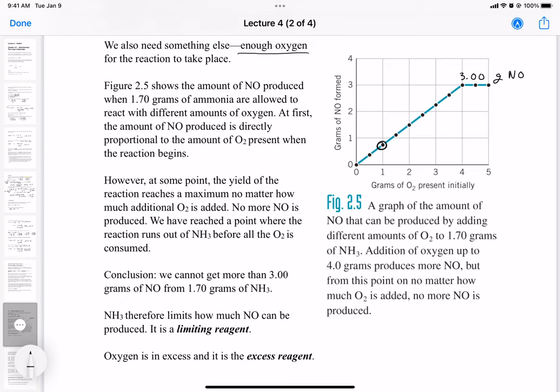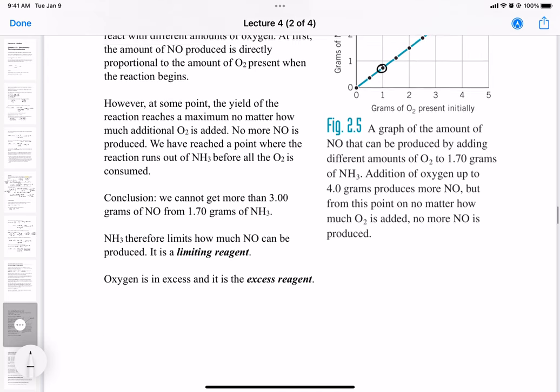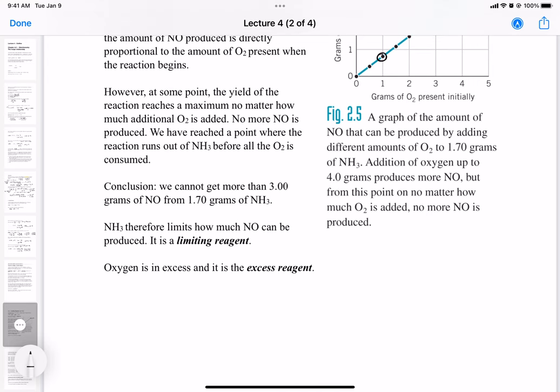And here we're saying as we increase oxygen past the point of excess, we can only get three grams of nitrogen oxide. That's how much nitrogen oxide we can produce. Therefore, if we keep adding oxygen here and we know we had initially three grams of ammonia, that means ammonia is our limiting reagent because it gets consumed first. And as we add more oxygen, eventually we stop producing nitrogen oxide. We say oxygen is in excess and is the excess reagent.